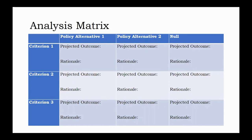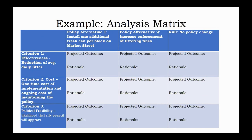It can be difficult to keep all of this straight, so you can help yourself visualize what you're doing by using an analysis matrix. For this step, we're just going to be setting it up. In the basic matrix, you can see we put our policy alternatives across the top and criteria down the left side. Each box then accounts for each policy's projected outcome in each criterion. For my example, I'm completing the setup by placing each of my policy alternatives across the top and criteria along the left side, imagining two policy alternatives as well as the null, and simply filling in the header boxes for now.